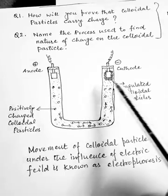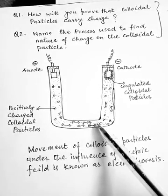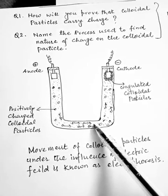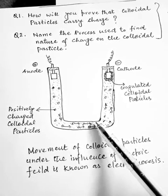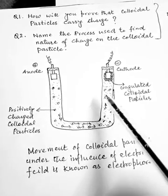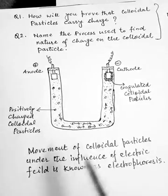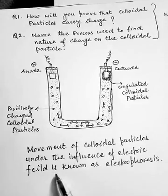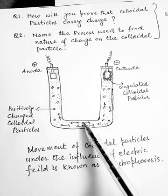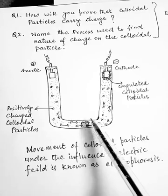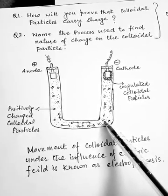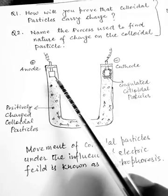Under the influence of the electric field, only the colloidal particles move towards the electrode. No movement of the dispersion medium towards the anode is observed. This movement of colloidal particles under the influence of an electric field is known as electrophoresis. The direction of movement depends on the kind of charge carried by the colloidal particles.